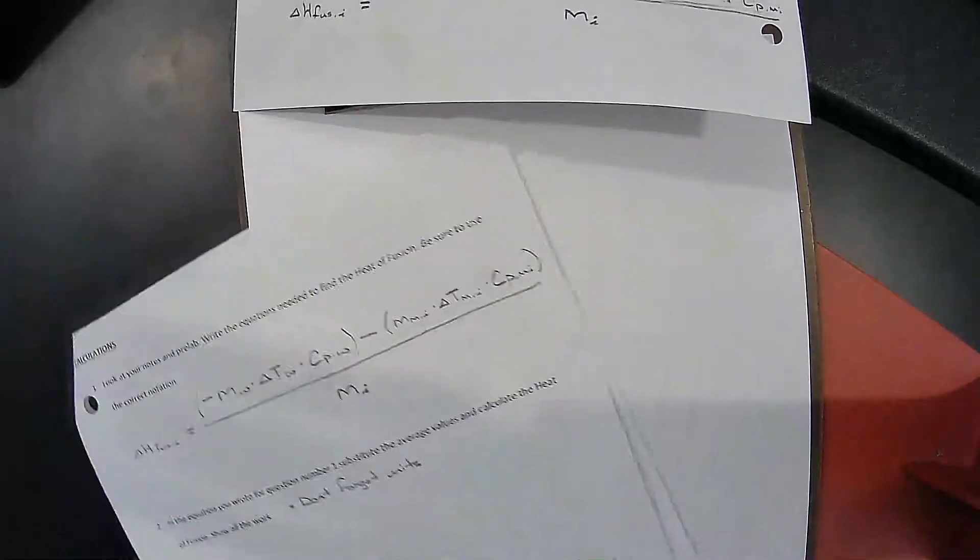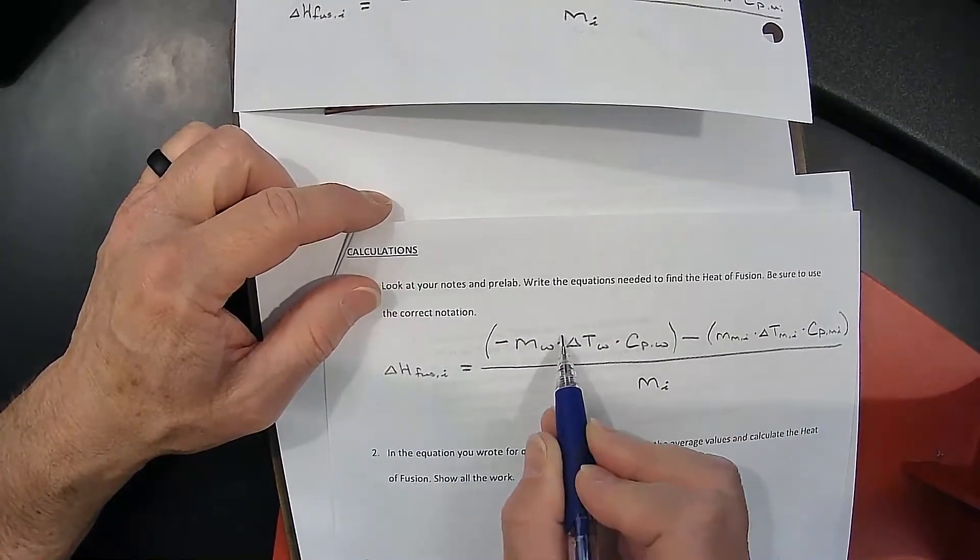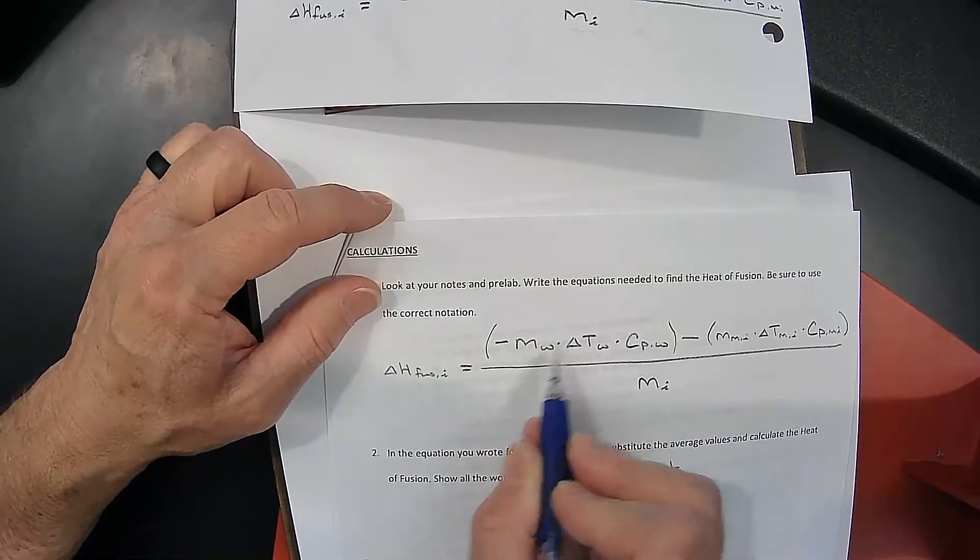So this change in water temperature is a negative value. It's dropped. So when you put this in, this is going to end up being a negative value. So the negative and the negative will cancel out, and those two will end up being positive.